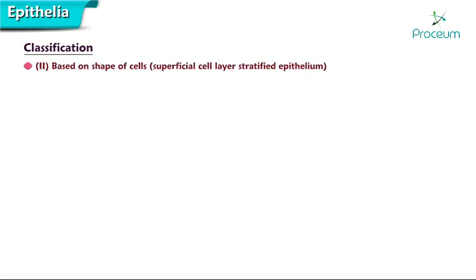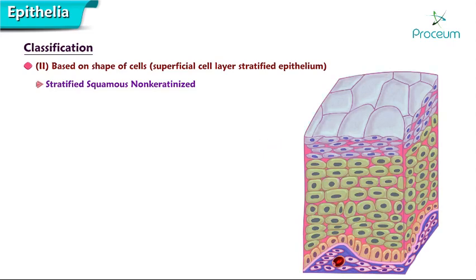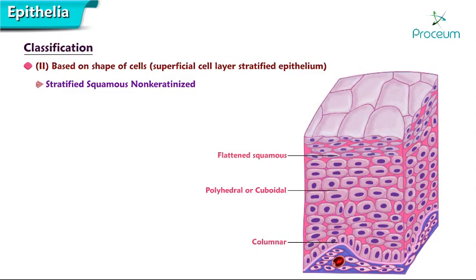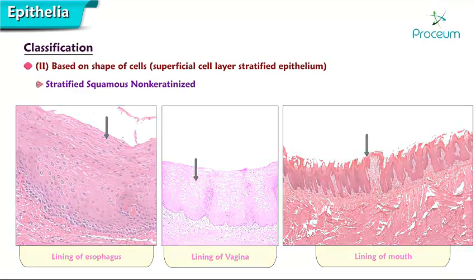Stratified epithelium is further classified based on the shape of the superficial cell layer. Stratified squamous non-keratinized: the superficial cell layer is flattened and nucleated. This epithelium is made up of several layers of cells; the basal layer cells rest on the basement membrane and are usually columnar in shape. Overlying them are polyhedral or cuboidal cells that become progressively flatter toward the surface. Occurrence includes the lining of the esophagus, vagina, mouth, anal canal, and vocal cords. Function is protection.